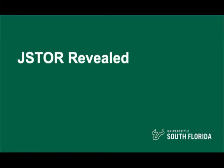Welcome to JSTOR Revealed. For historians and other humanities scholars, JSTOR is a much-used resource with 12 million academic journal articles, books, and primary sources in 75 disciplines.